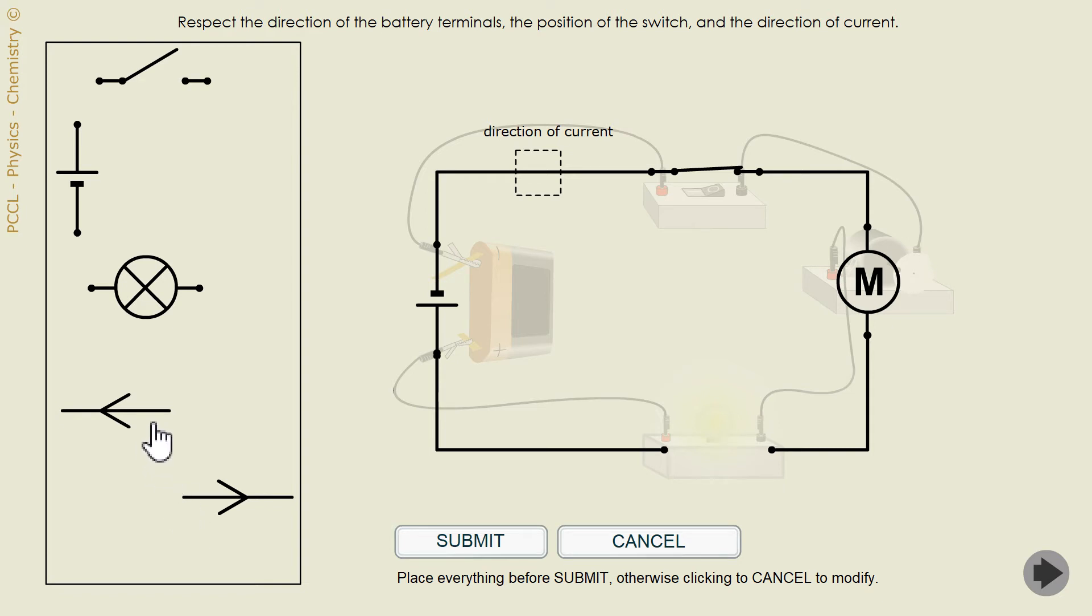And the arrow for the direction of the current. So I have the choice between these two arrows. Where will I get the information? Well here. I look at where the plus sign is on the battery. The current is coming out that way. This means that it flows in this direction and it is therefore this arrow quite naturally that I will choose.